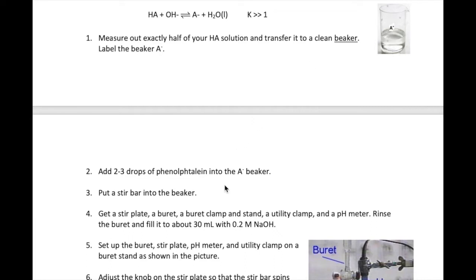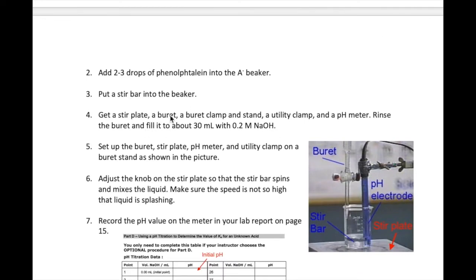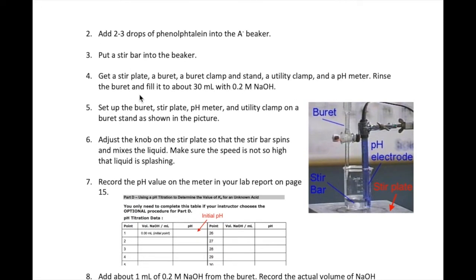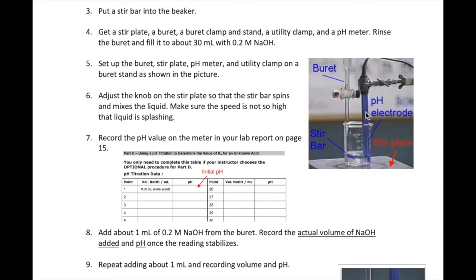Add a couple of drops of phenolphthalein as your titration indicator. Put a stir bar into your beaker — a stir bar is just a small bar magnet you can get from your instructor. Next, get the following: a stir plate, a burette with its clamp and stand, a utility clamp, and a pH meter. Rinse and fill the burette with about 30 milliliters of 0.2 molar sodium hydroxide. Then set up the equipment as shown in the picture. The beaker with the stir bar should be as close to the center of the stir plate as possible. The glass tip of the pH probe should be submerged under the solution, and the burette tip should be inside the beaker to make sure that the NaOH drips into the solution.